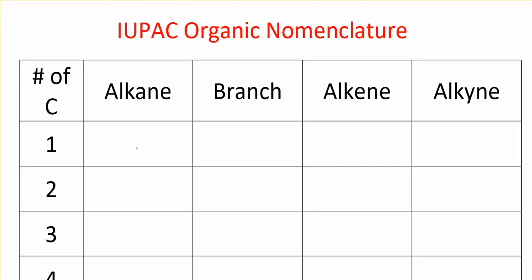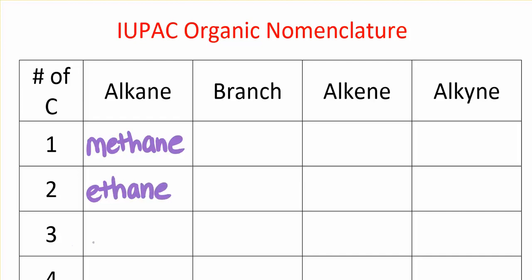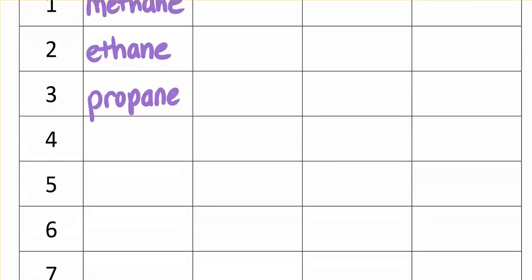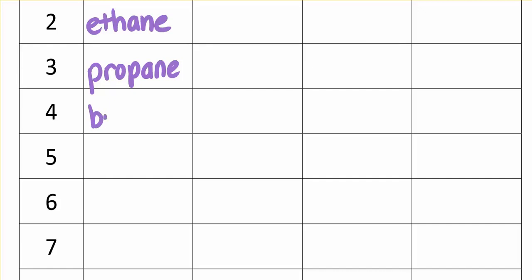We're going to start with the alkane names. An alkane with one carbon is called methane. Spelling is important — the parts of the words have meaning, so we're going to be very picky on spelling. An alkane with two carbons is called ethane, three carbons is propane, four carbons is butane, five is pentane, and six is hexane.